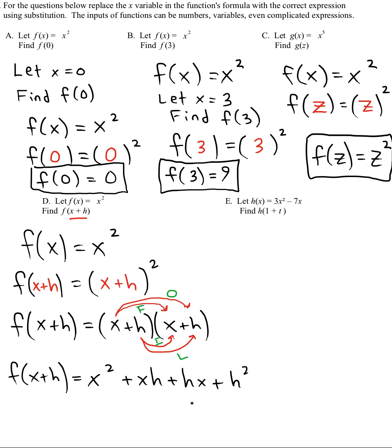And now we can just combine any like terms like xh and hx are alike. So we can just add them together. We'll get x squared plus 2xh plus h squared. That's our formula.